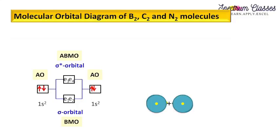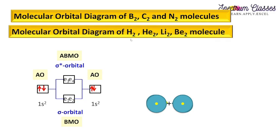Hello everyone, welcome back to Spectrum Classes. In this video I am going to discuss how to draw the molecular orbital diagram for boron, carbon, and nitrogen diatomic molecules. In my previous video I discussed how to draw the molecular orbital diagrams for hydrogen, helium, lithium, and beryllium molecules. The difference is that those are all s-block elements and only s orbitals are involved in the formation of their molecular orbital diagrams.